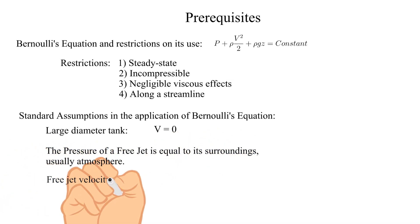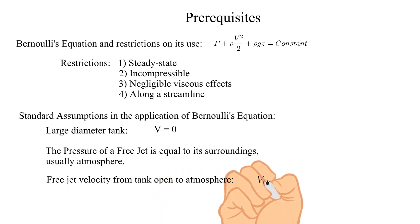The velocity of a free jet to atmosphere from a tank open to atmosphere is equal to the square root of two times the acceleration of gravity times the depth or distance between the free surface of the tank and the free jet.